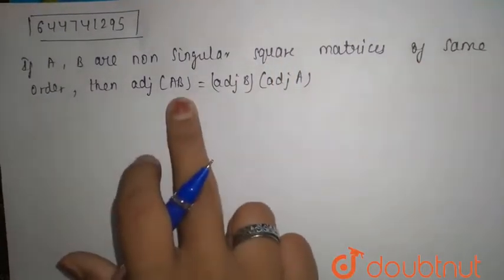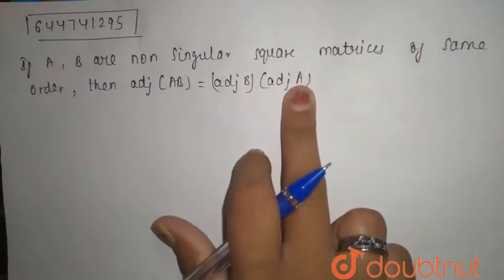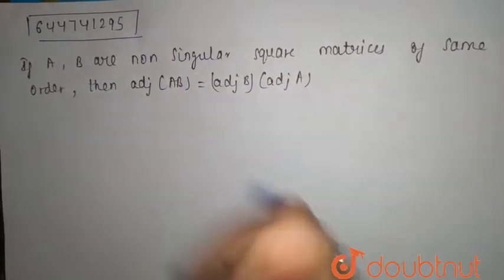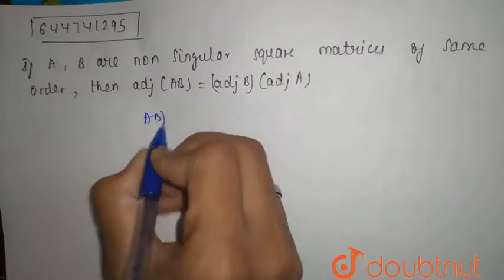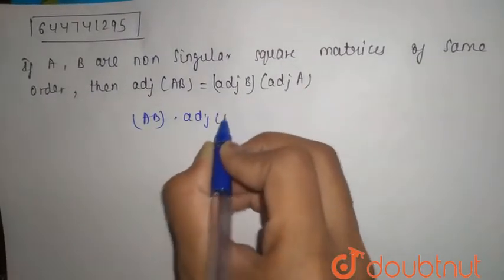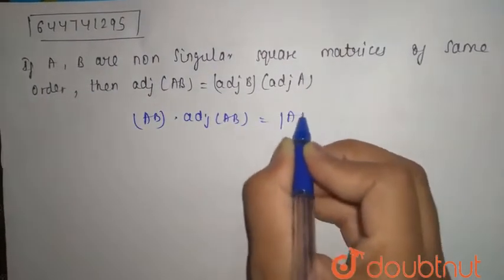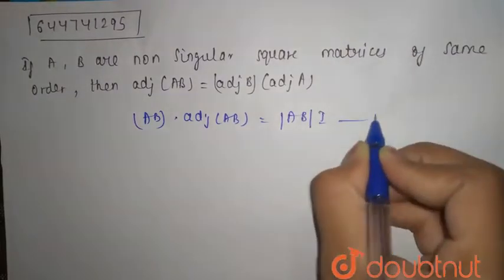then adjoint of AB equals adjoint of B into adjoint of A. So first of all, we have given AB adjoint of AB equals mod of AB into I. This is your first equation.